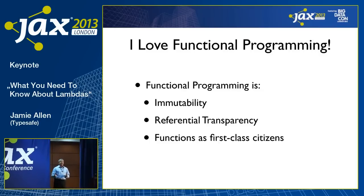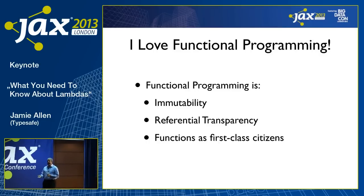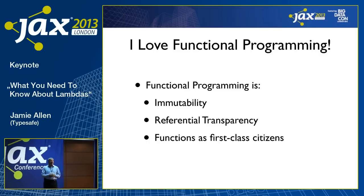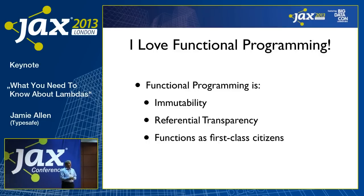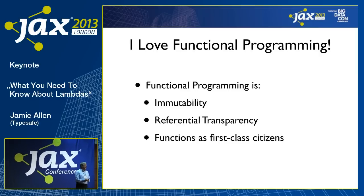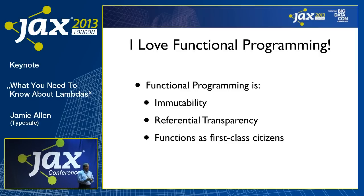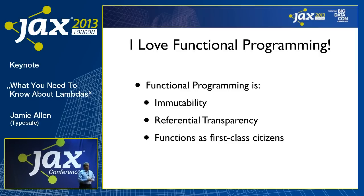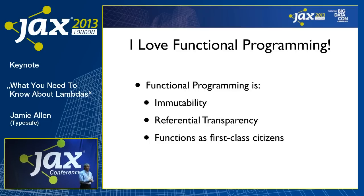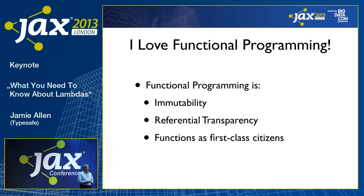We want referential transparency inside of our code as well. And then we want functions as first-class citizens — by that I only mean that functions are an object just like anything else on the virtual machine. You can pass them around, pass them into methods, and use them any which way you want because they're just another object type.